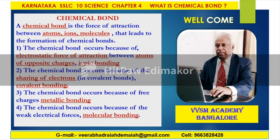Therefore, the chemical bond occurs because of the sharing of electrons. Let us discuss about the sharing of electrons — how the electrons are shared between atoms, how the electrons are shared between ions, and how the electrons are shared between molecules.